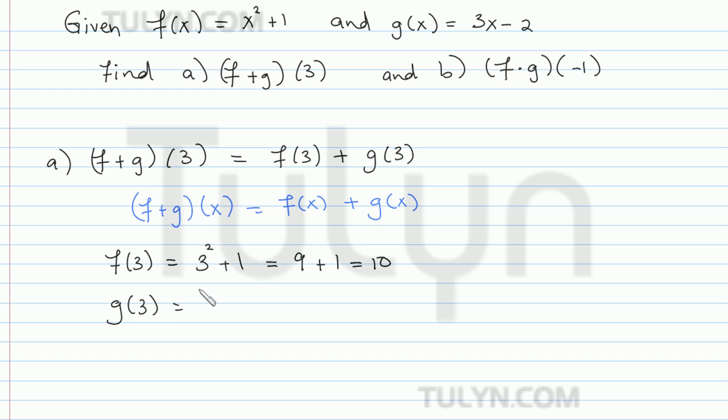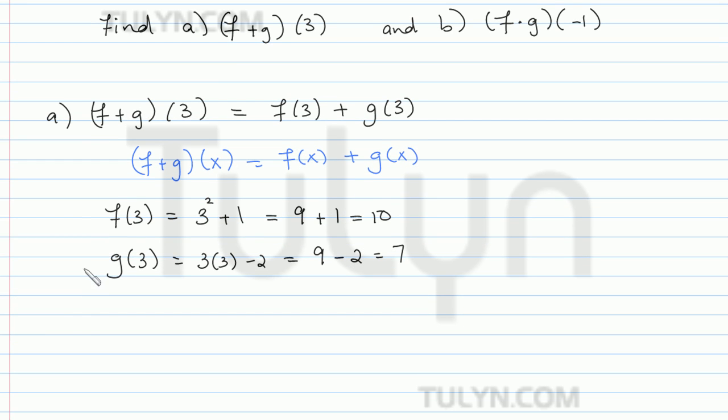And then g of 3 is the same thing. It's g of x when x is equal to 3. So 3 times 3 minus 2, which is 9 minus 2, which turns out to be 7. So now, putting everything together, f plus g of 3 is f of 3 plus g of 3, which is 10 plus 7, which equals 17.